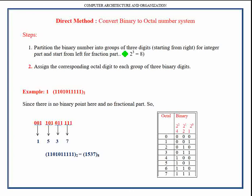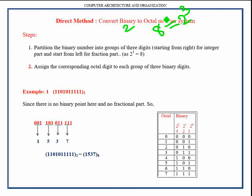The reason for partitioning the binary number into groups of three digits is that the base value for binary is 2 and the base value for octal is 8, which is equivalent to 2 to the power 3. That is why whenever a binary number is converted into octal, it has to be partitioned into groups of three digits.